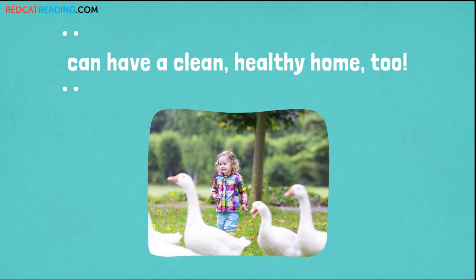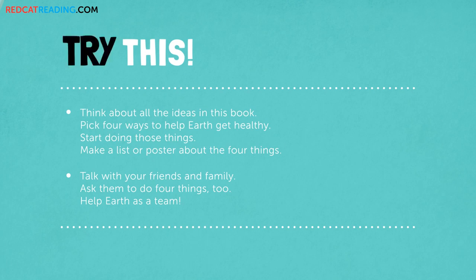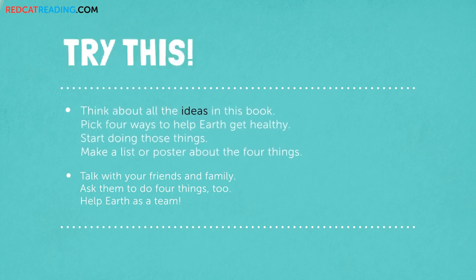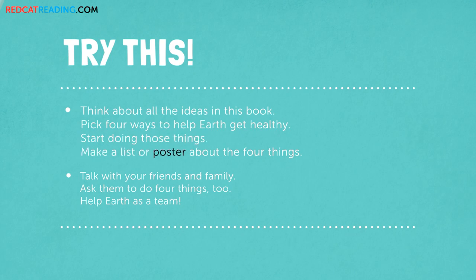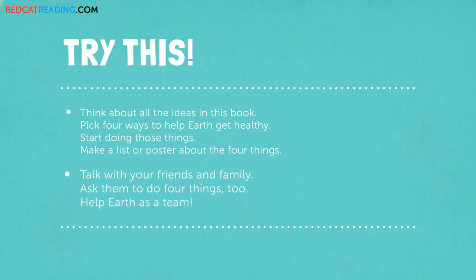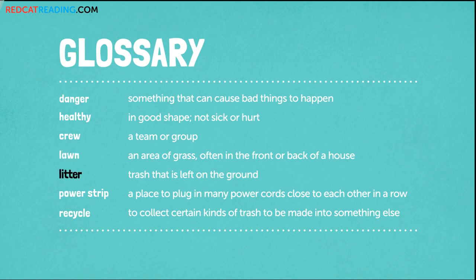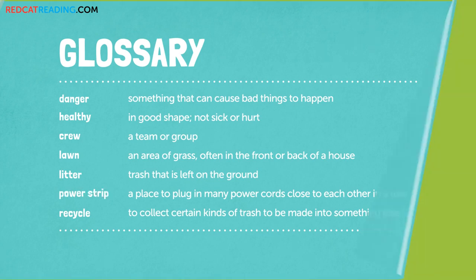Working together: talk with your friends and family about helping earth. Work together to help fix earth's problems. We can have a clean, healthy home. Plants and animals can have a clean, healthy home too. Try this: think about all the ideas in this book. Pick four ways to help earth get healthy. Start doing those things. Make a list or poster about the four things. Talk with your friends and family and ask them to do four things to help earth as a team.